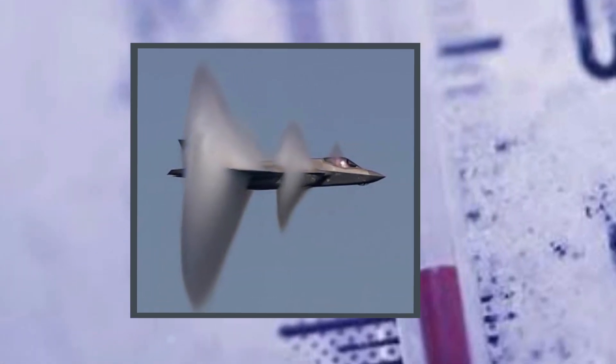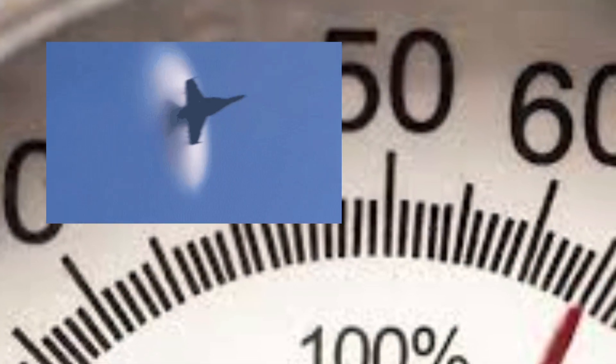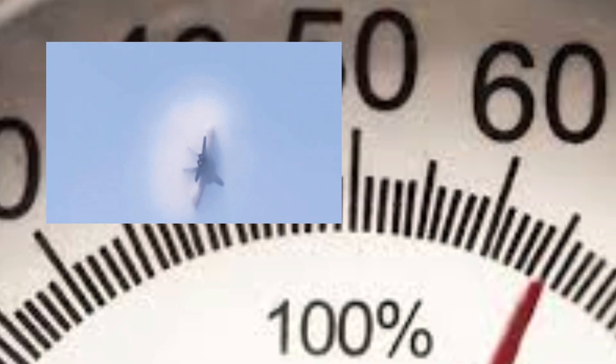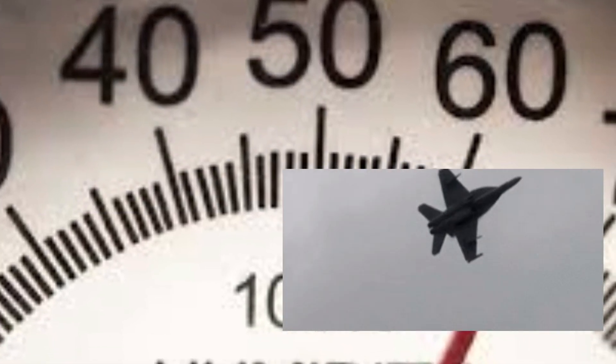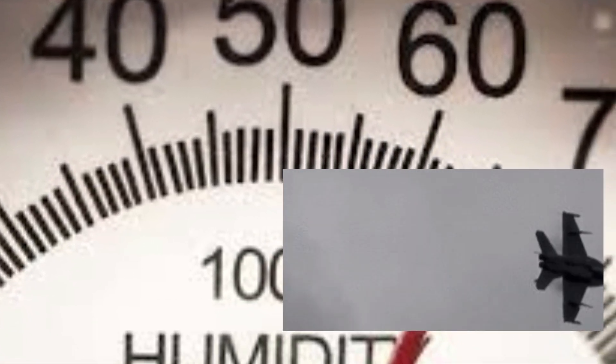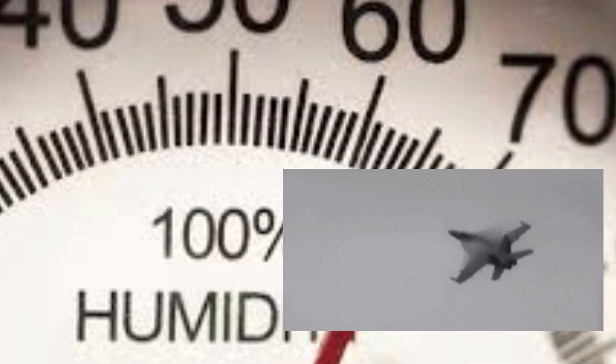This cloud typically forms in a conical shape around the aircraft, hence the term vapor cone. The visibility of the vapor cone depends on the humidity of the air. Higher humidity increases the likelihood of condensation and a more pronounced vapor cone. The cone is often observed in humid conditions near the ground or above the ocean.